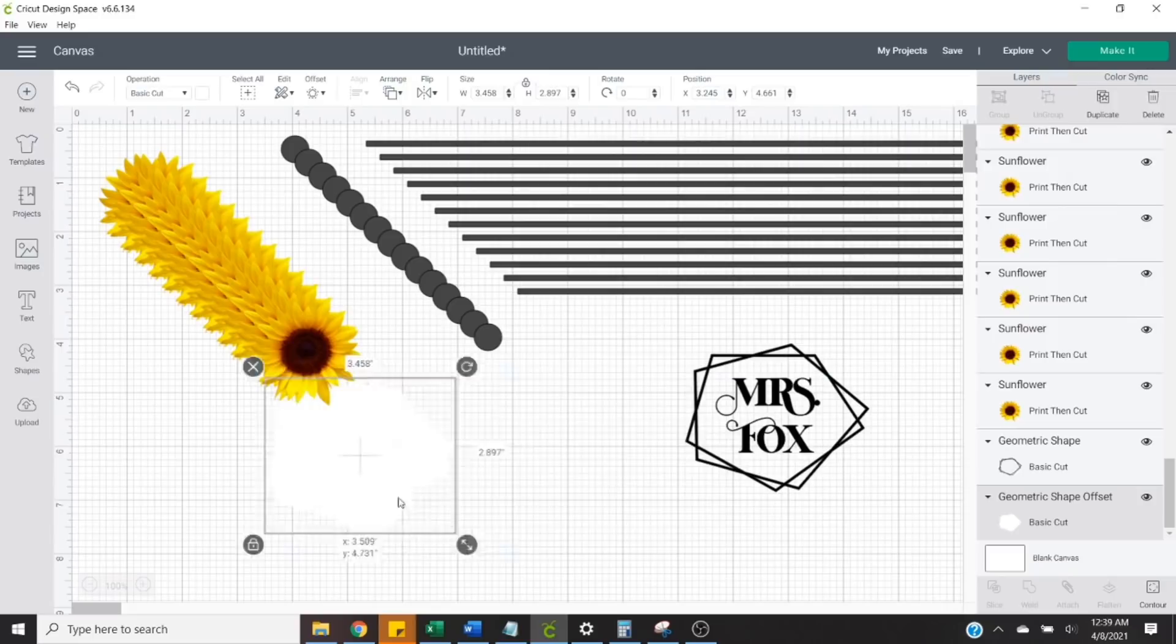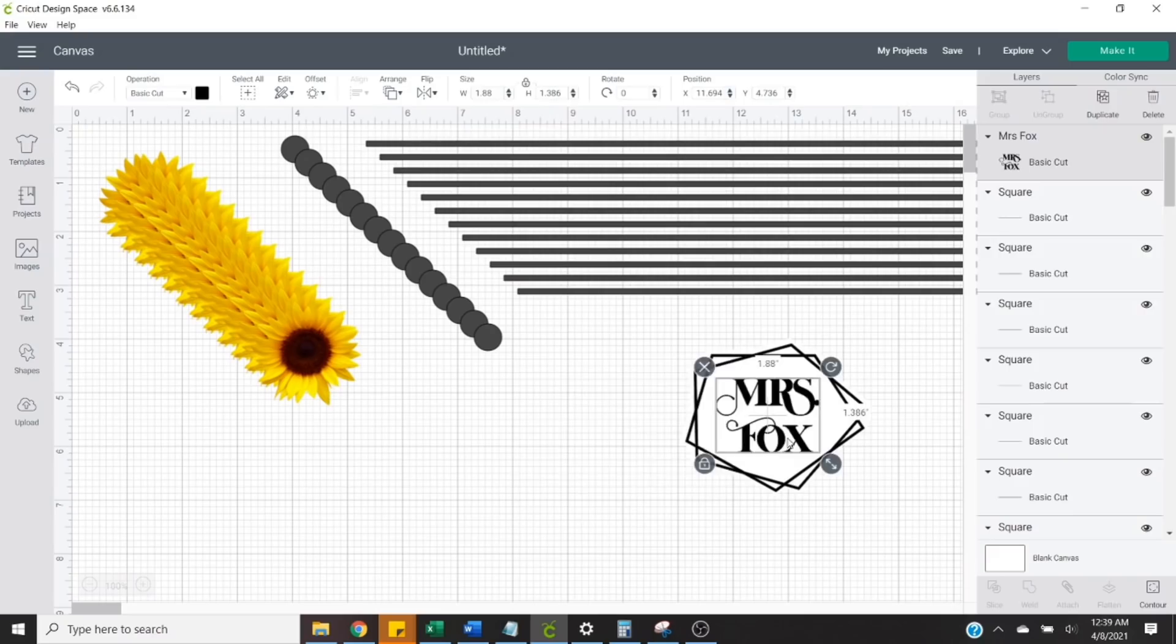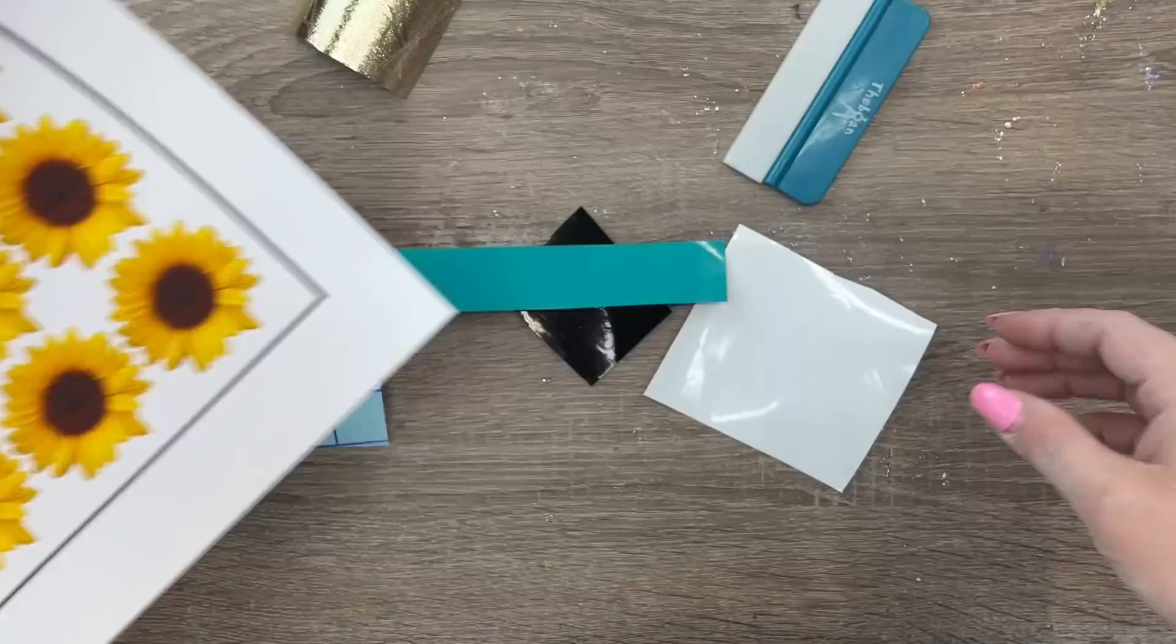It ended up being smaller than I anticipated. Once everything looks right and we're ready to roll, I'm just going to get this all printed and cut. Then we'll be putting it on our cup.